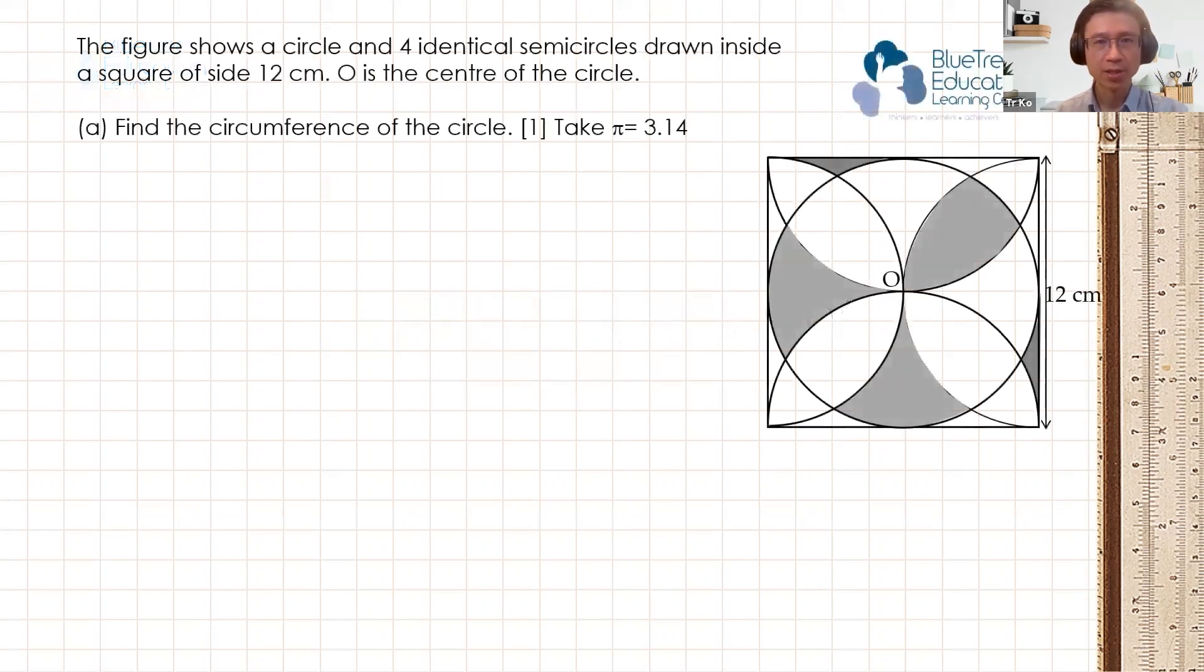All right, this is a question on circles. The figure shows a circle and four identical semicircles drawn inside a square of 12 centimeters. O is the center of the circle.